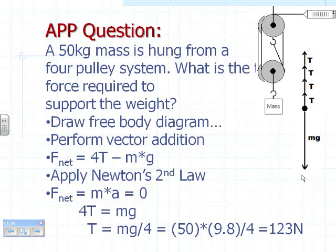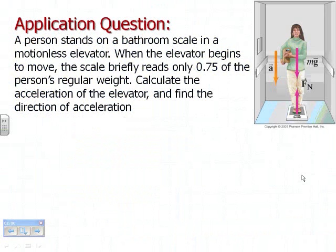Let's do some more. A person stands on an elevator. The elevator begins to move briefly. The scale that they're standing on, silly elevator with scales in it, reads 75% of the person's weight. Let's calculate the acceleration of the elevator. So, again, step one, draw a picture. Here, there's already a picture there. Step two, draw a free body diagram.